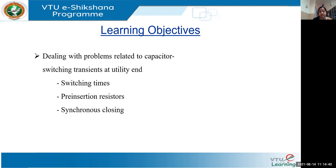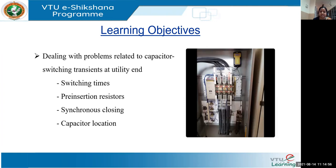For that reason, we will be studying two different methods: pre-insertion of resistors and synchronous closing — that is, synchronous closing circuit breakers — and how these two methods will help reduce such transients in the system. We will also see the importance of the location of these capacitors at the utility end or at the customer's end.